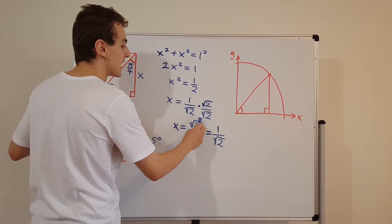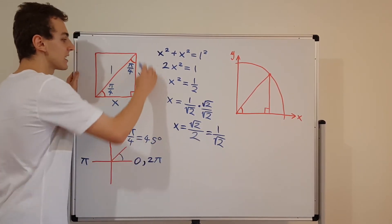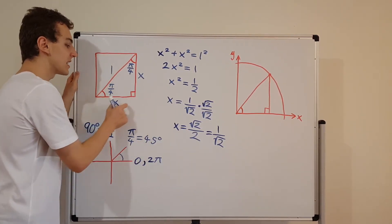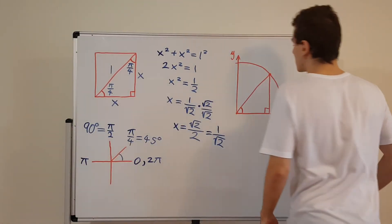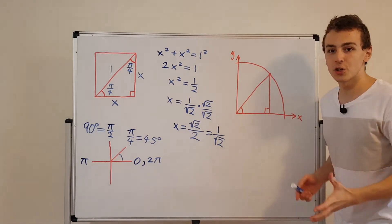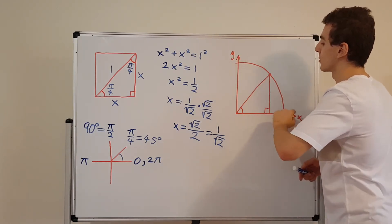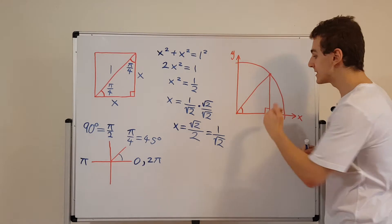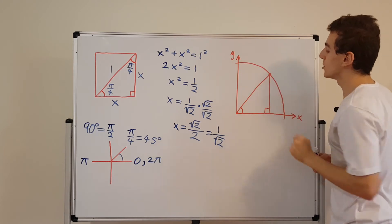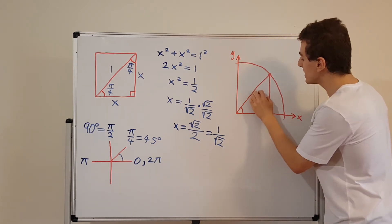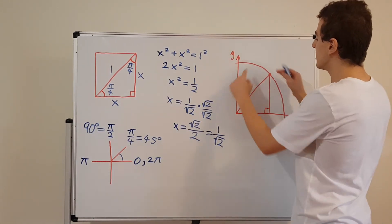So both legs of the triangle have length root 2 over 2. Now let's move on to the unit circle diagram. This diagram shows the top right quadrant of the unit circle — from 0 to pi on 2 radians. What I've done is embedded our triangle inside the unit circle. One end is fixed to the origin, and one vertex actually lies on the unit circle.